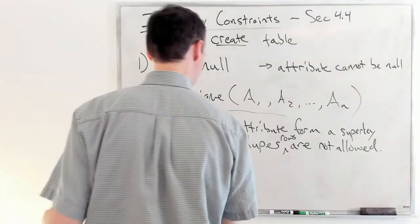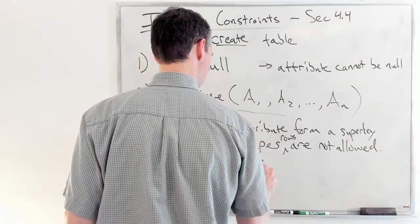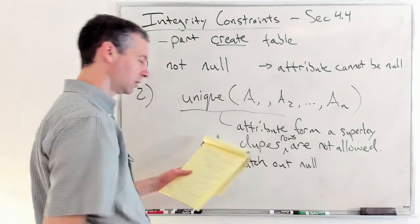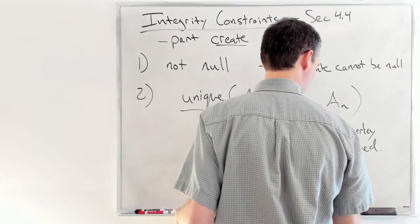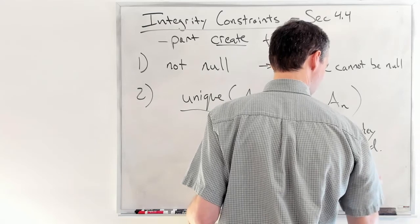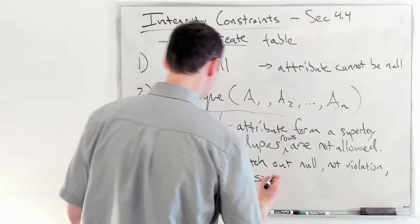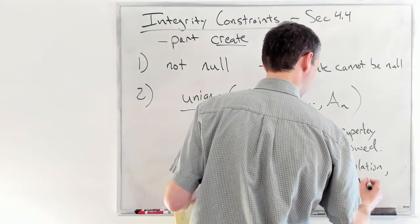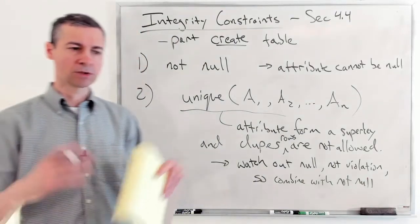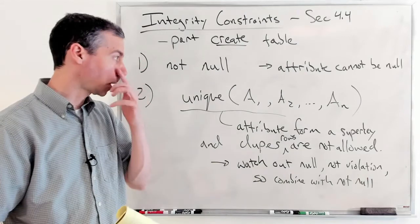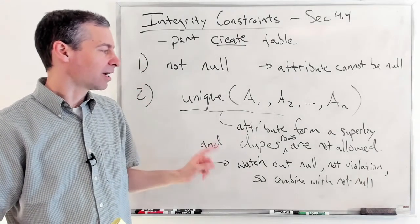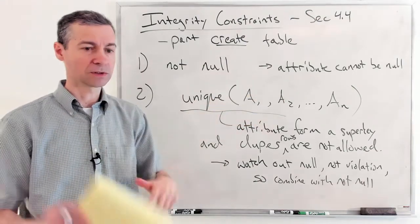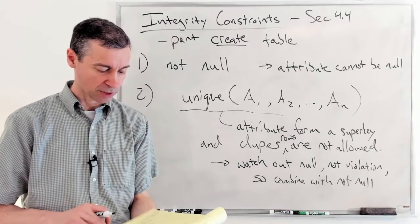Be careful, because if you have nulls and you allow them, which again, I advise against it, I advise using not null, but if you have a null, this is considered not a violation of the uniqueness. And so you really do want to combine the notion of unique with not null. So if you're saying, oh yeah, I'm going to have these attributes be unique. They're basically, again, they're going to form a super key for this table. Yeah, you should probably be also declaring all of them to be not null. Otherwise you could insert rows with nulls and they're not going to violate the uniqueness issue is my understanding.